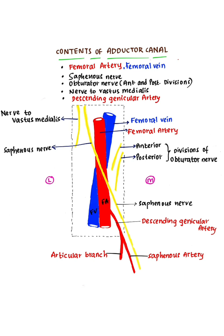There are three nerves. Remember the mnemonic S-O-N: saphenous nerve, obturator nerve — both anterior and posterior divisions of the obturator nerve — and the nerve to vastus medialis.